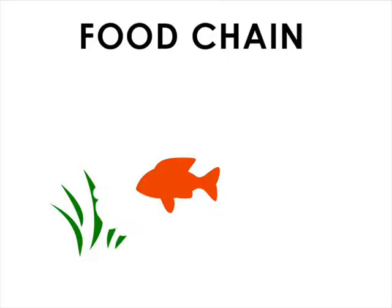Fiddler crabs, snails, small shrimp, and fish such as minnows feed on decomposed marsh grasses. Oysters and clams filter detritus and tiny living plants from the water. These organisms become food for crabs, birds, and a variety of fish. This interaction is known as food chains.